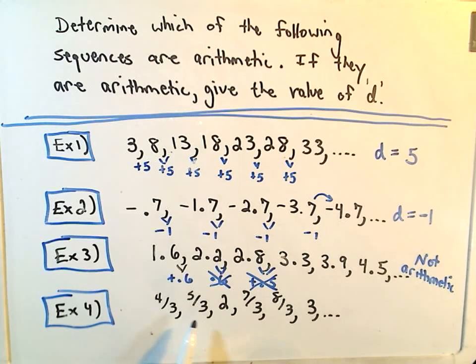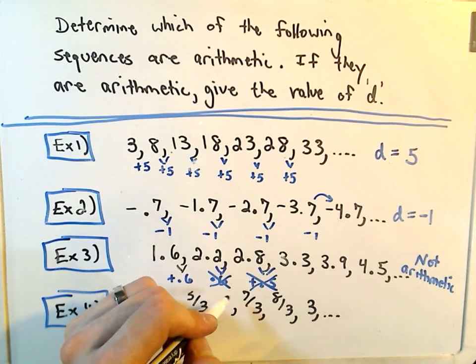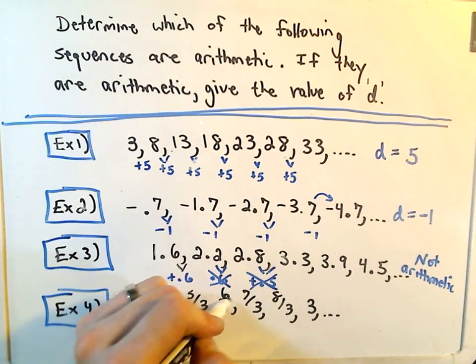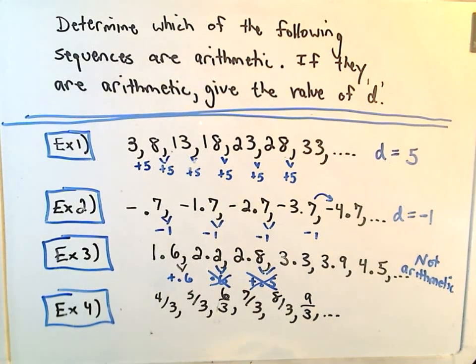And in my last one here, 4 thirds, 5 thirds, 2, 7 thirds, 8 thirds, 3. Well notice we could change 2 if we make that into a fraction. We could make it 2 over 1, multiply top and bottom by 3. Hey, we would get 6 thirds. Likewise, we could make 3 into 9 thirds.